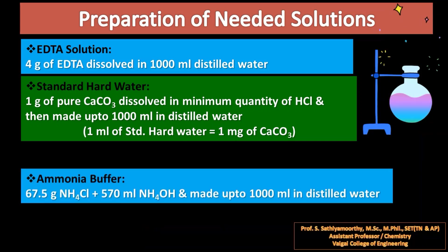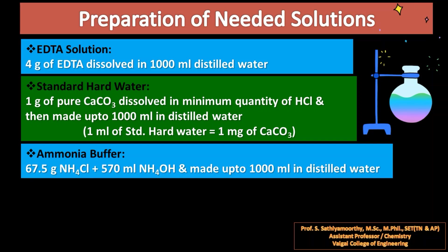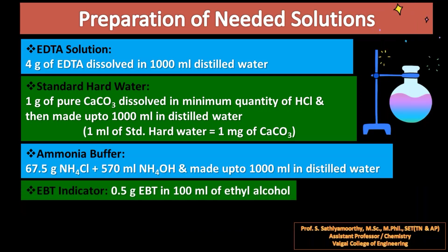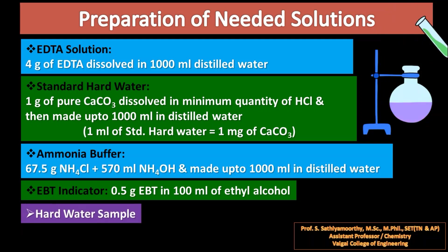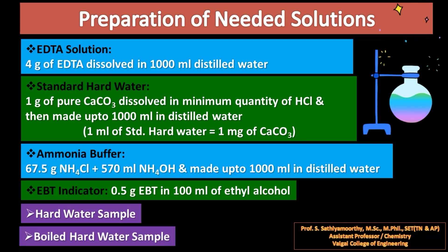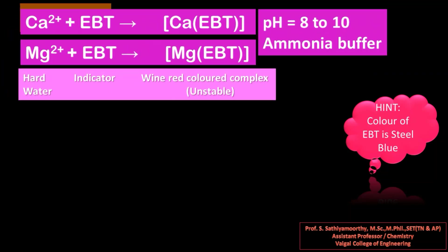We also need an ammonia buffer to maintain the pH in the range of 8 to 10. For that we take ammonium chloride and ammonium hydroxide in the given quantities and make them up to 1000 ml in distilled water. Then we need EBT indicator dissolved in ethyl alcohol, or EBT mixed with sodium chloride, taking a few pinches as indicator. We also need a hard water sample to estimate total hardness, and a boiled hard water sample to estimate permanent hardness.